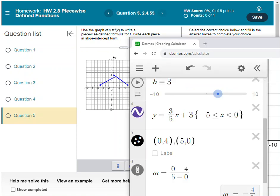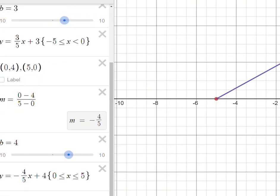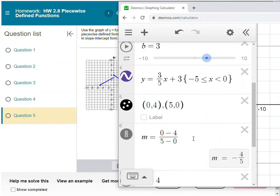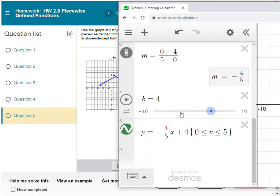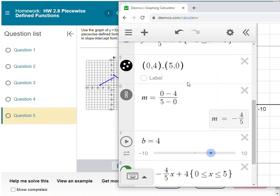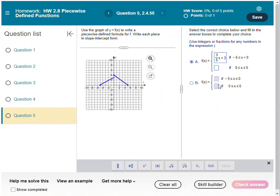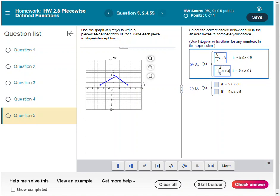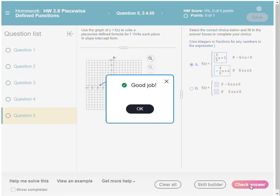And the second line, the line that went from (0, 4) to (5, 0), was (-4/5)x + 4, so we'll fill that one in here. All right, and I can check my answer. If you have further questions about this, please let me know.